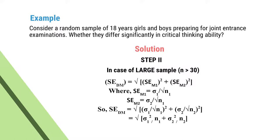SE(M1) equals σ1 divided by the square root of N1. SE(M2) equals σ2 divided by the square root of N2. So the standard error of difference between the two means equals the square root of (σ1 divided by square root of N1) squared plus (σ2 divided by square root of N2) squared.